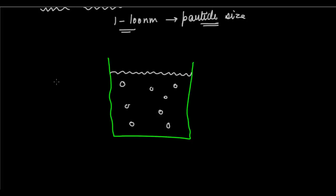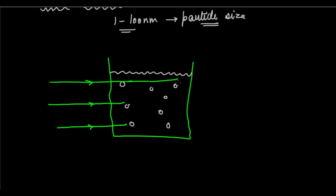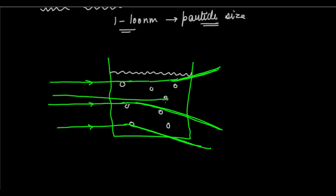When I pass rays of light through this solution, those light rays are going to enter the solution and collide with the particles, which have a considerable size of 1 to 100 nanometers. We will see that the light rays are going to be scattered — they strike and scatter. If you pass even more rays of light, there will be even further scattering.